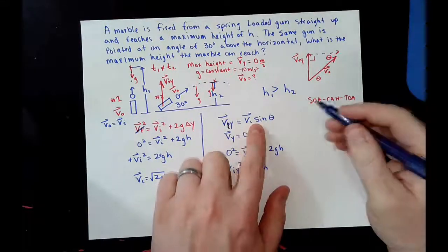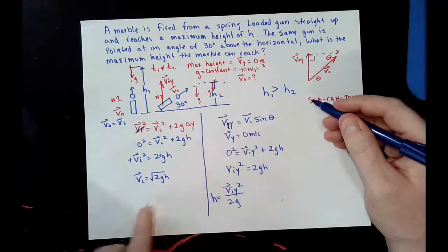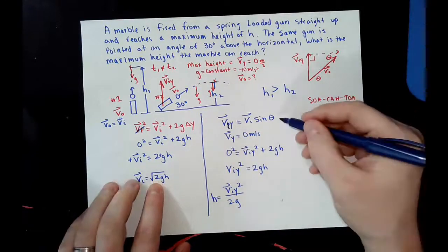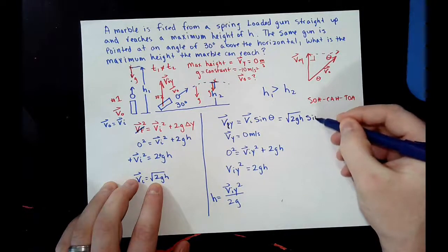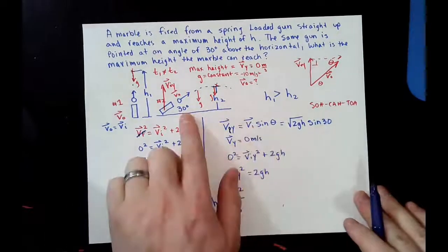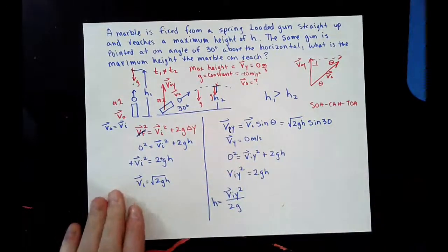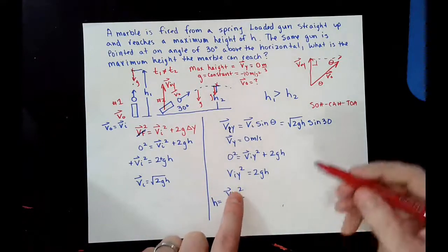So, we knew v i is square root 2gh. So, this turns into this, the square root of 2gh times the sine of 30. Because that's my angle that I'm shooting at. So, now, if we notice here, we have velocity initial, but it's squared. So, what we have to do is we have to square this.